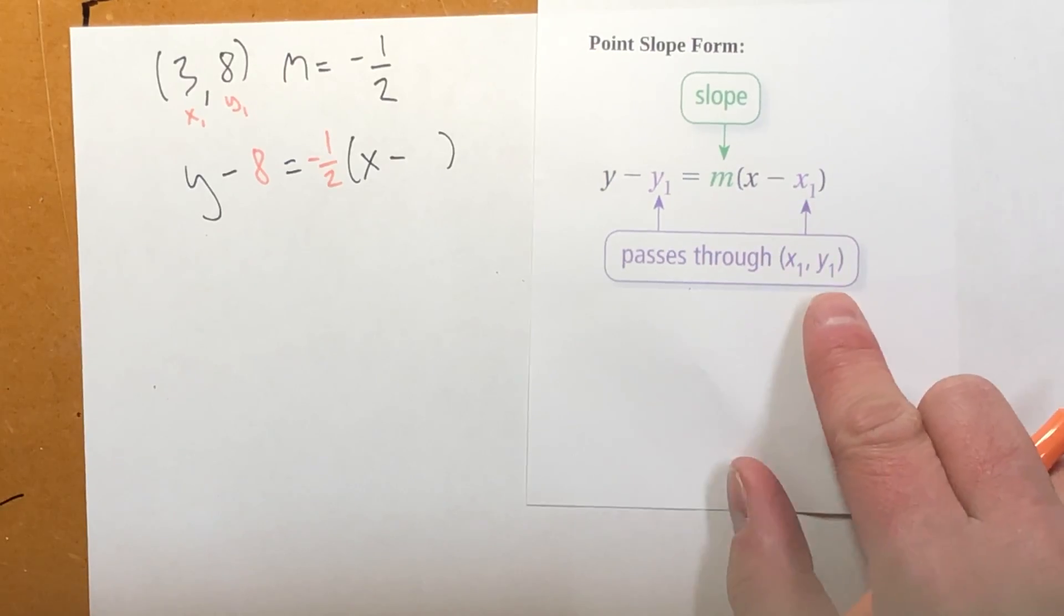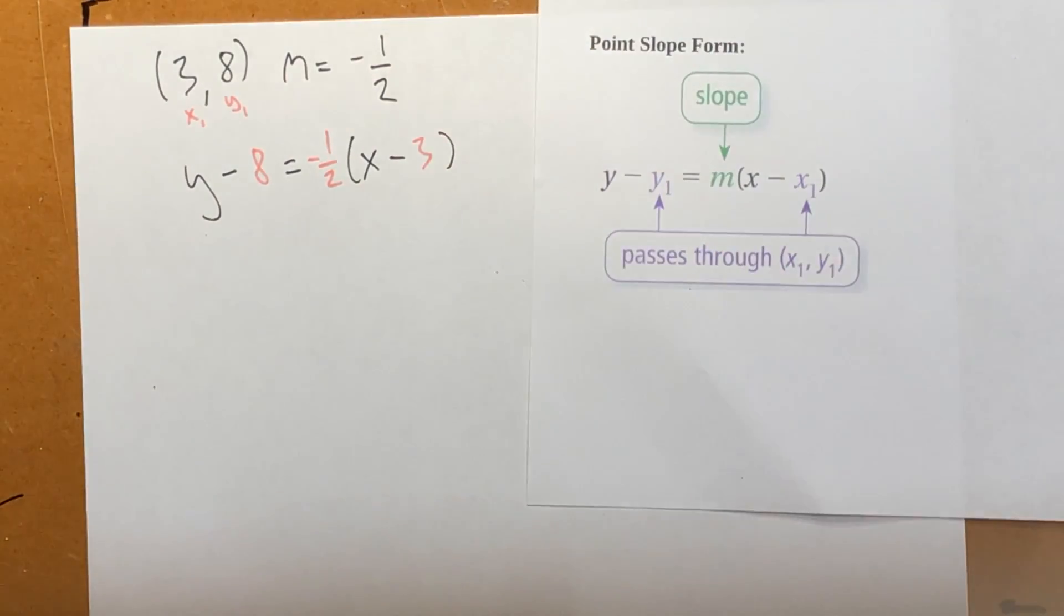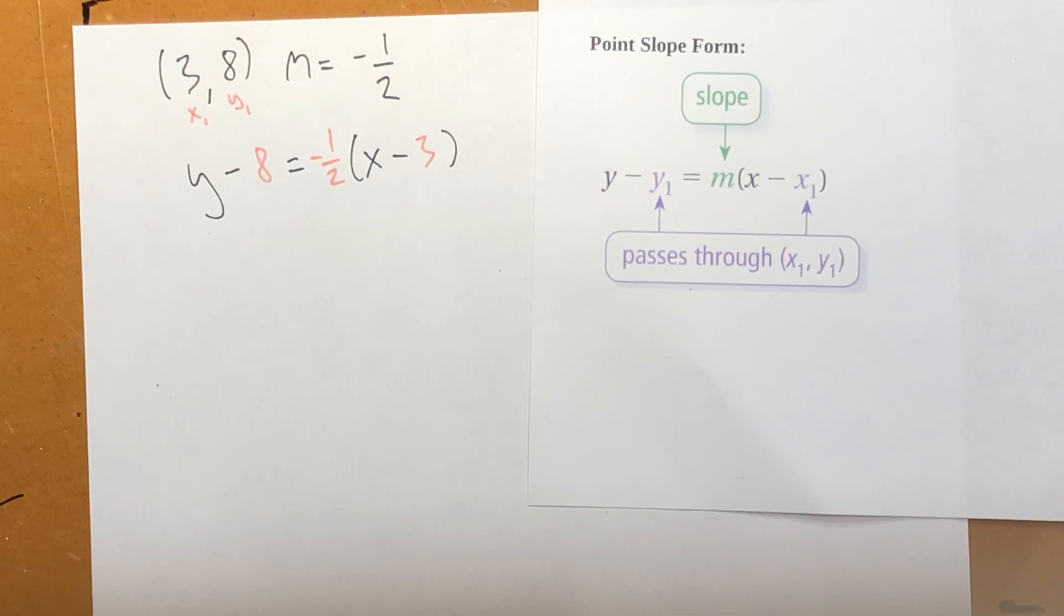My x value of the given point is 3. So let's plug in 3 there. And there you have it. There is point-slope form. It's kind of an ugly equation, but that's the equation I want.